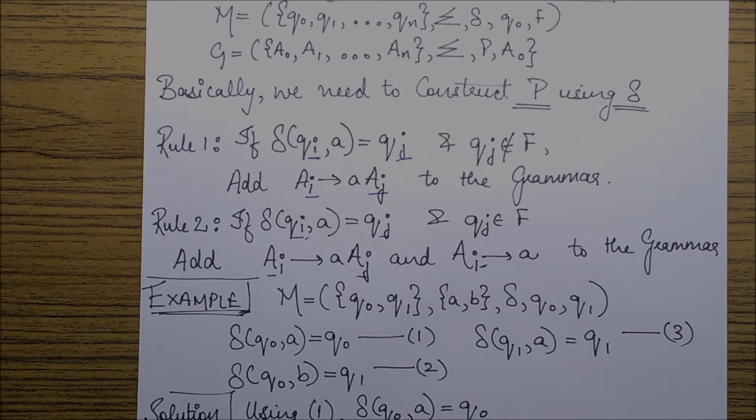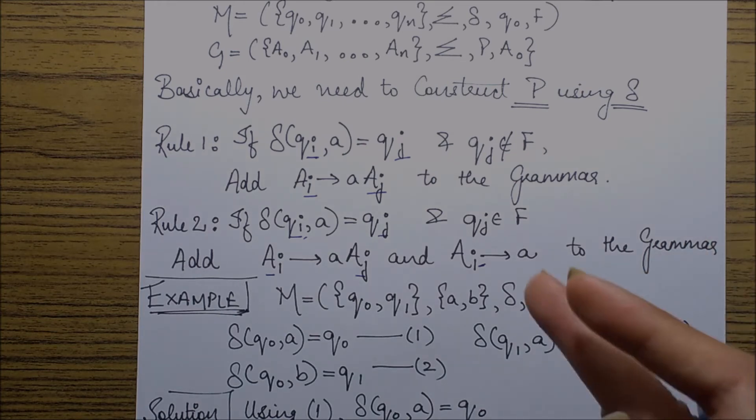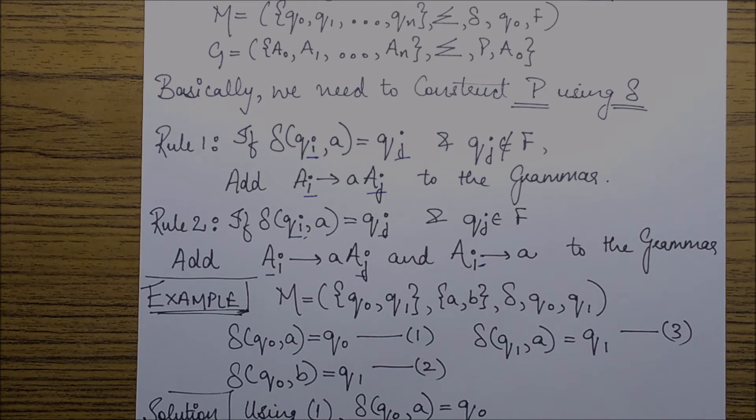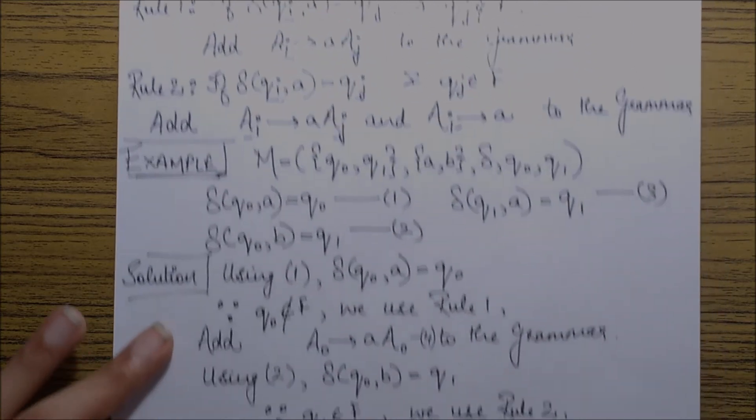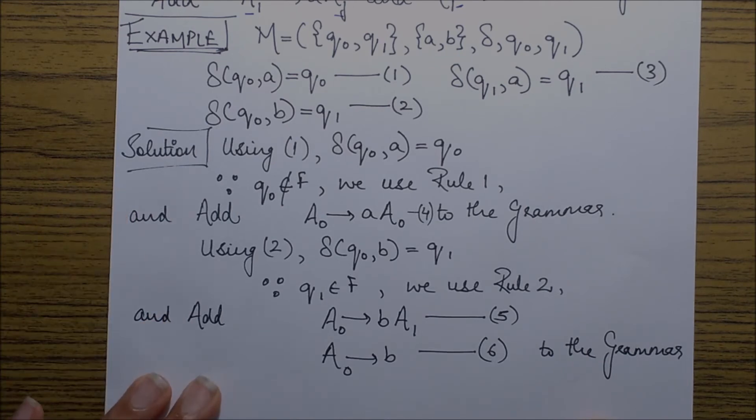So the grammar will eventually be constructed if we apply rule 1 and rule 2 repetitively until we have covered all the transitions. Let's see this with the help of an example.